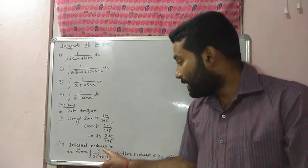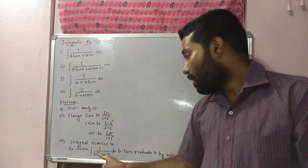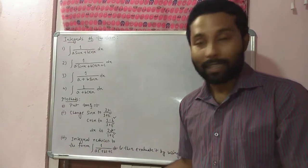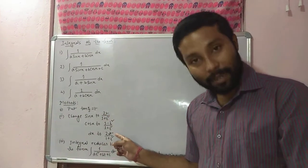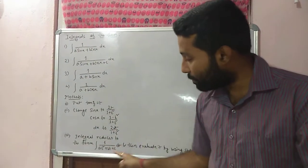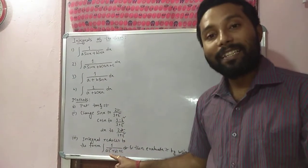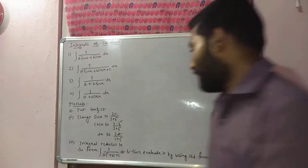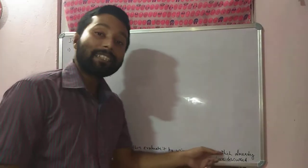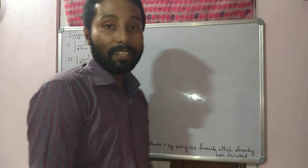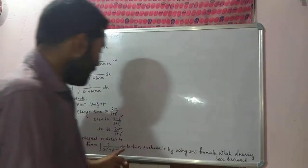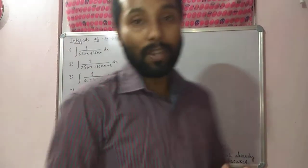After these two steps, the integral automatically reduces to the form 1/(at²+bt+c) dt. This is what you have to evaluate using the six standard results I already discussed earlier in class.